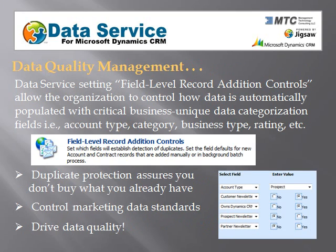In Data Service Settings, the option Field Level Record Addition Controls allows the organization to control how the data is populated automatically with critical business unique criteria information like account type, category, and business type. Duplicate protection assures you don't buy what you already have. You control the marketing data standards and drive data quality.